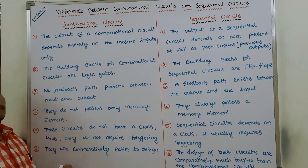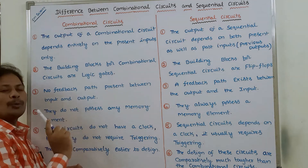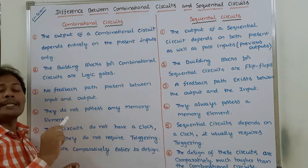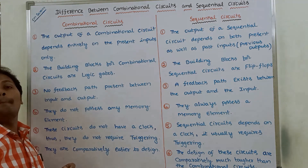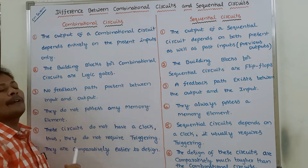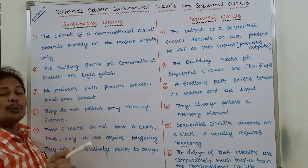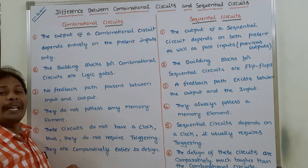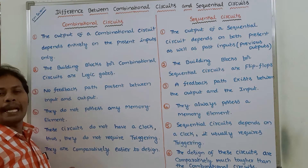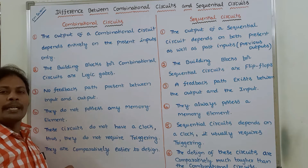Third point: no feedback path is present between input and output. In the case of combinational circuits, there is no feedback connection between the output and the input. Whereas in the case of sequential circuits, a feedback path exists between the output and input. Because of that reason, sequential circuits depend not only on the present input but also on the past inputs, that is nothing but previous outputs.